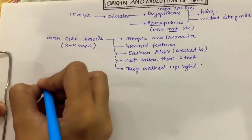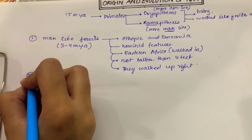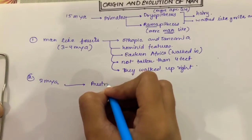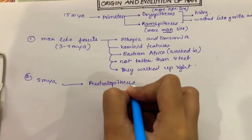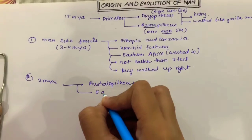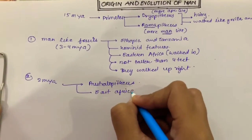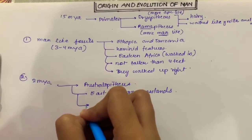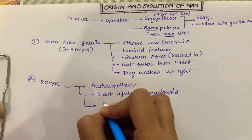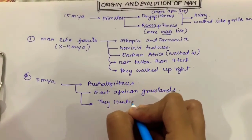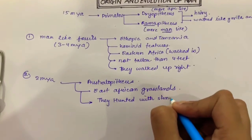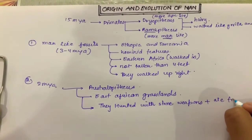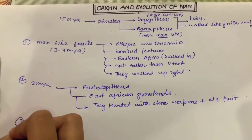Next, about 2 million years ago, Australopithecus were found in East African grasslands. The difference was that they hunted with stone weapons and ate fruit.